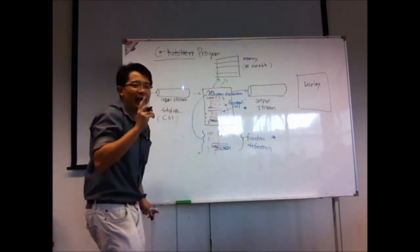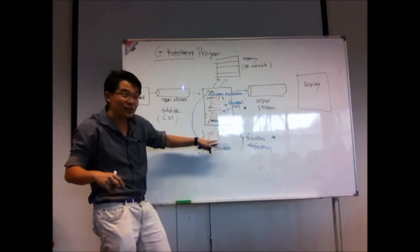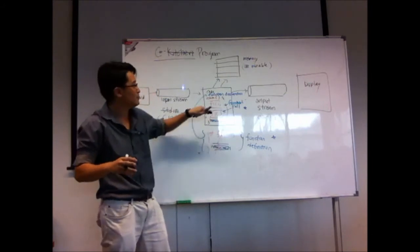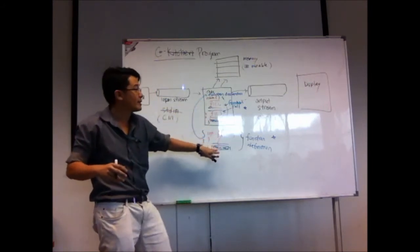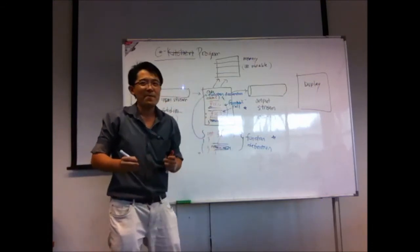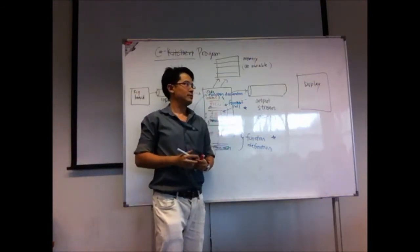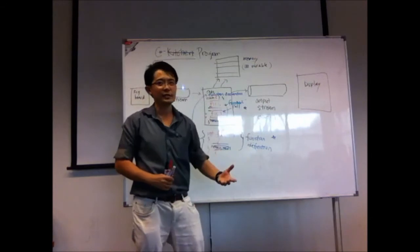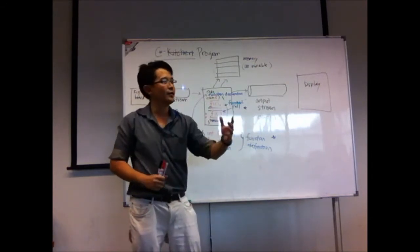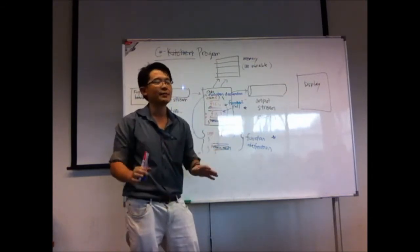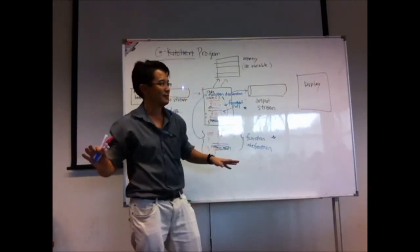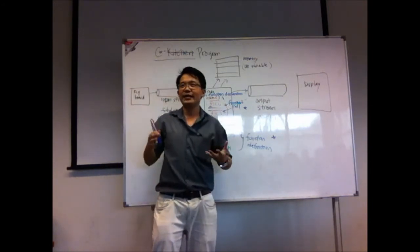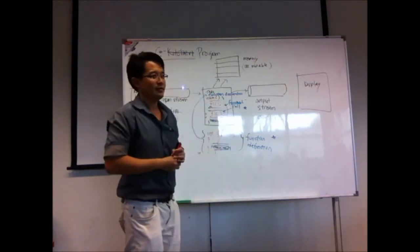The return of main — now main returns to who? The other functions like function one and function two are accessory functions; they return to main. Main returns to the operating system. If you are using Windows, main will return to Windows. If you are using Linux or Unix, it will return to Linux or Unix. And it's telling the operating system: I'm done, you can kick me out from the memory. Main function returns to the operating system, telling it: I'm done, you can remove me from memory.